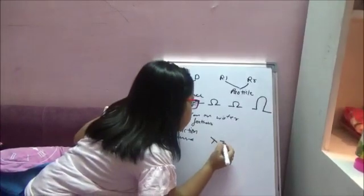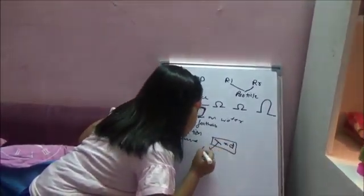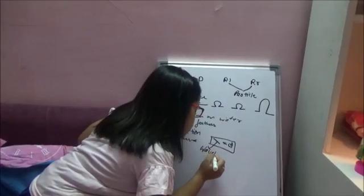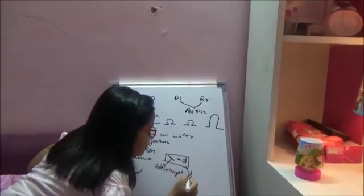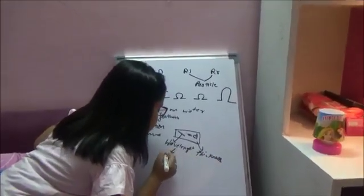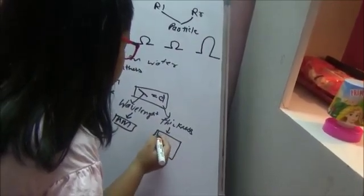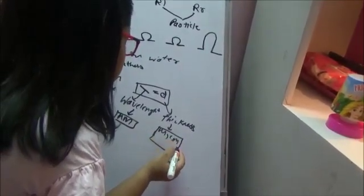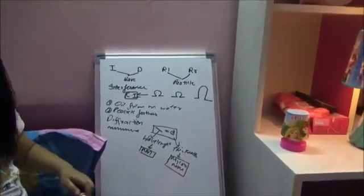The condition is that the wavelength of light must be comparable to the thickness of the object. As we know, the wavelength is measured in nanometers, but the thickness of objects we see in our day-to-day life is in meters, centimeters, or millimeters. So diffraction is not observed in everyday life, and that is the end of diffraction.